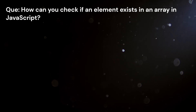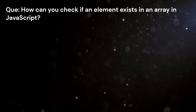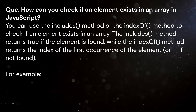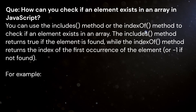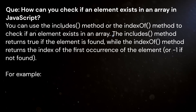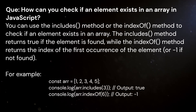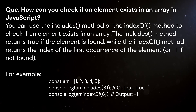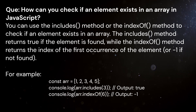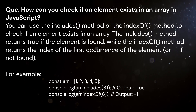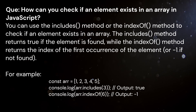Question: How can you check if an element exists in an array in JavaScript? Answer: You can use the includes method or the indexOf method to check if an element exists in an array. The includes method returns true if the element is found, while the indexOf method returns the index of the first occurrence of the element, or minus one if not found.